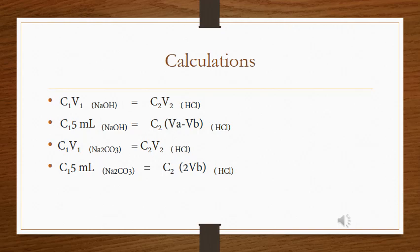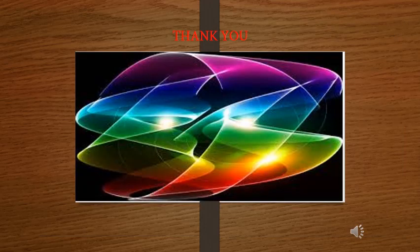بالنسبة لحساب تركيز Na2CO3: حجم العينة في الكونيكال هو 5 mL. الـ VB يمثل نصف الـ Na2CO3، لذلك نضربه في 2 للحصول على الحجم الكامل المكافئ لكل الـ Na2CO3. نطبق القانون: C(HCl) × 2VB = C(Na2CO3) × 5. وبذلك تنتهي الحسابات الخاصة بهذه التجربة. Thank you.